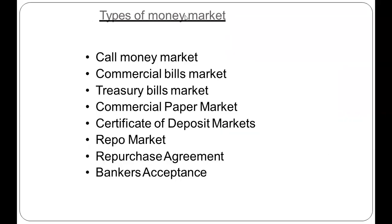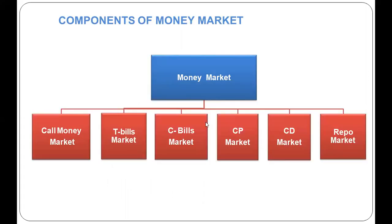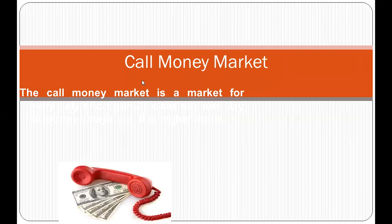There are several types of money market instruments: the call money market, commercial bill market, treasury bill market, commercial paper market, certificate of deposit market, repo market, repurchase agreement, and banker's acceptance. These will be discussed one by one in the following slides. First up is the call money market.